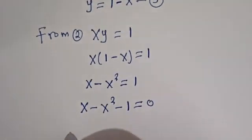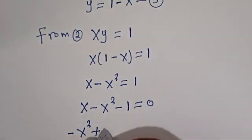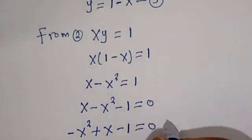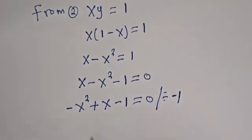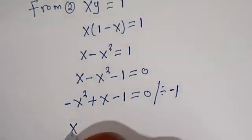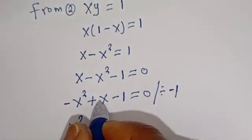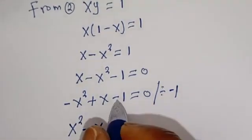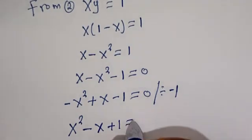Let's rearrange this. We have minus X squared plus X minus 1 is equal to 0. Let's divide through by minus 1. That gives X squared minus X plus 1 is equal to 0.